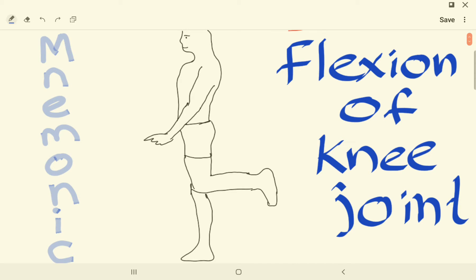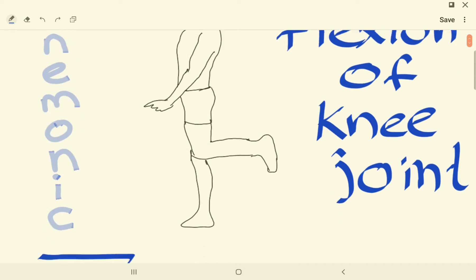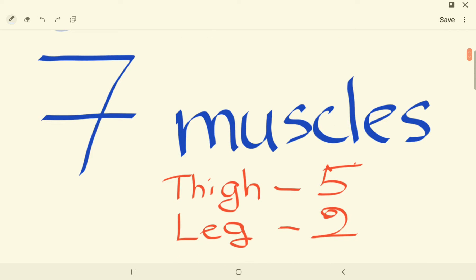Hello everyone, this is Med Med Fun. So today we are going to talk about mnemonics regarding the knee joint. Let's look at the flexion. There are seven muscles according to the book, this may vary, and there are five thigh muscles and two leg muscles.